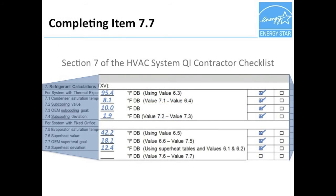Item 7.7 is used to document the target superheat temperature. In this case, the equipment had a TXV, so no target superheat temperature was provided. Instead, for illustration purposes, a target was calculated using guidance from California's energy code. Item 7.8 is used to calculate and record the difference between the actual superheat temperature and the target superheat temperature. In this case, the difference is 5.7 degrees.